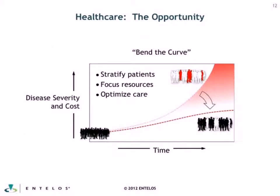From the healthcare side of the world, the opportunity is different and it's really all about saving costs. If you look at a population of individuals, some are higher risk, on disease trajectories where they're going to be costing the healthcare system much more money than the average patient. The term often referred to is bending the curve — pulling that curve down to the right — by stratifying patients to identify those most at risk, focusing resources on therapies and adherence, and optimizing their care with the best drugs and lifestyle interventions, particularly in cardiometabolic disease, to change their disease trajectory.